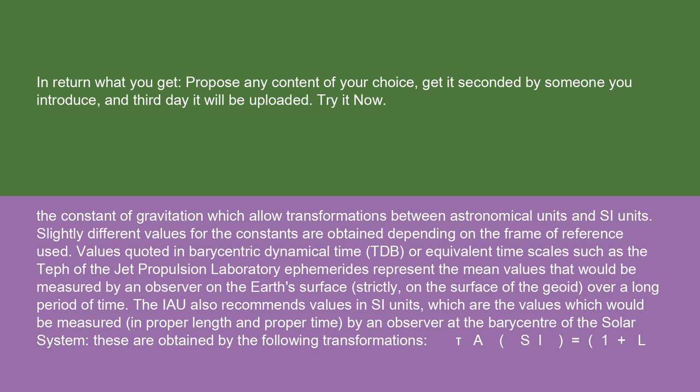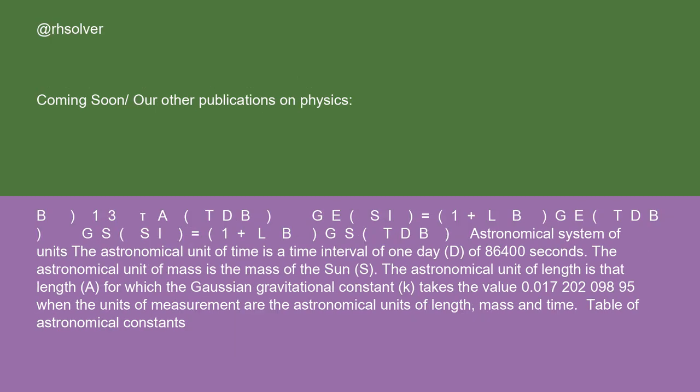These are obtained by the following transformations: Tau_A(SI) equals 1 plus L. The term G(SI) equals 1 plus L_B; G(TDB) G(SI) equals 1 plus L_B G_S(TDB).